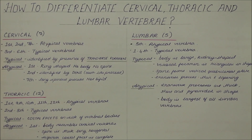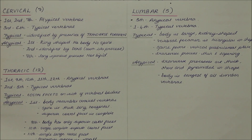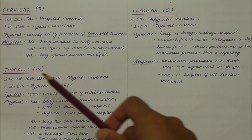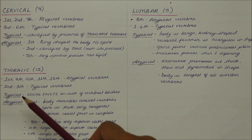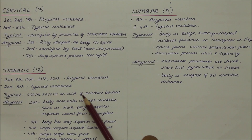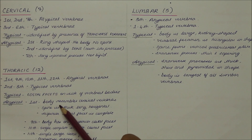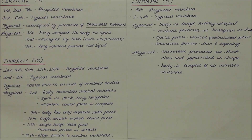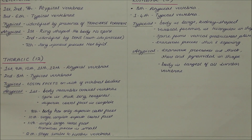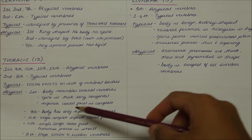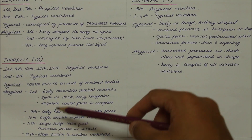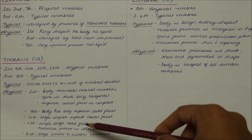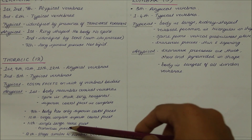In summary: there are 12 thoracic vertebrae. The first, ninth, tenth, eleventh, and twelfth are atypical; the second to eighth are typical. Typical vertebrae are identified by costal facets on the sides of the vertebral bodies. The first thoracic body resembles a cervical vertebra with a thick, long, horizontal spine and a complete superior costal facet. The ninth has only one superior costal facet; the tenth has a single complete superior costal facet; the eleventh has a single large costal facet with a small transverse process; and the twelfth resembles the lumbar vertebra.